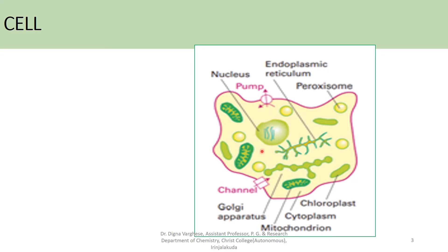The eukaryotic cell contains the nucleus, endoplasmic reticulum, peroxisome, chloroplast, cytoplasm, mitochondria, Golgi apparatus, and there are membrane-bound ionic pumps and ionic channels that control the flow of ions between the compartments.